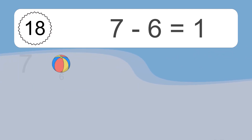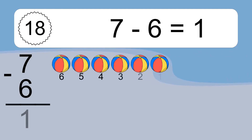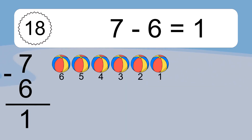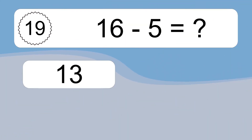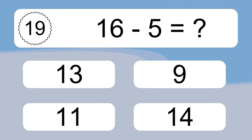7 minus 6 equals 1. Let's count it: 6, 5, 4, 3, 2, 1. 16 minus 5 equals what?